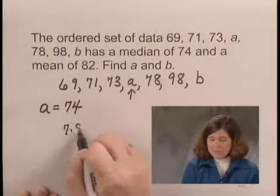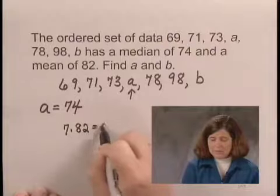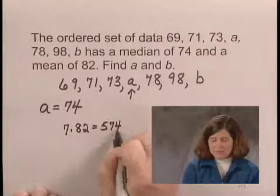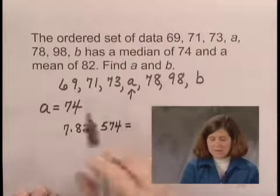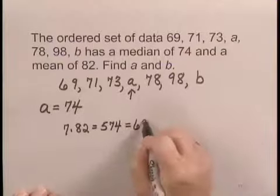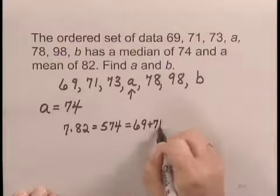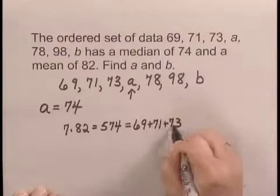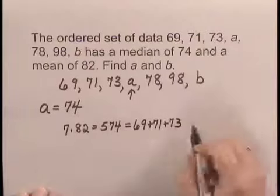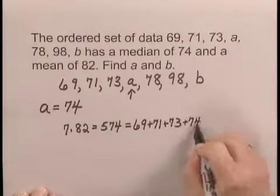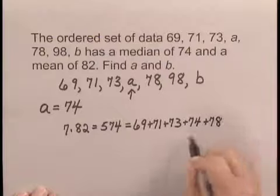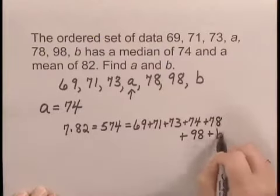7 times 82 is 574. And that has to equal 69 plus 71 plus 73, and then a is 74 plus 74 plus 78 plus 98 plus b.